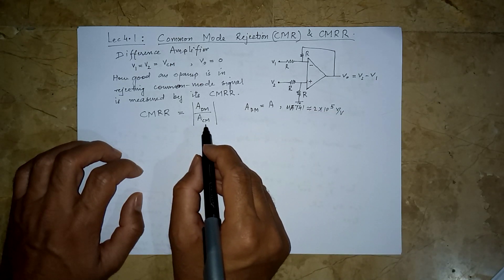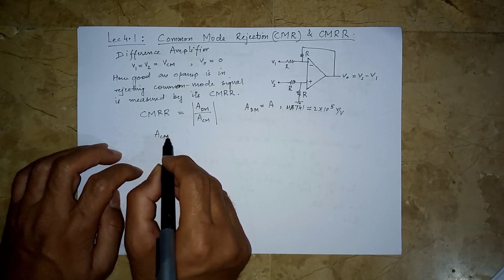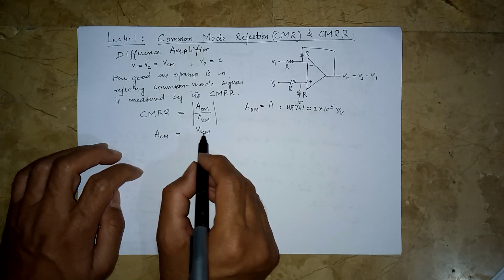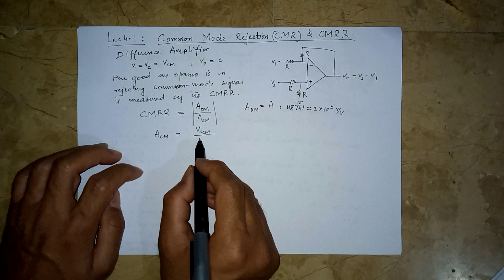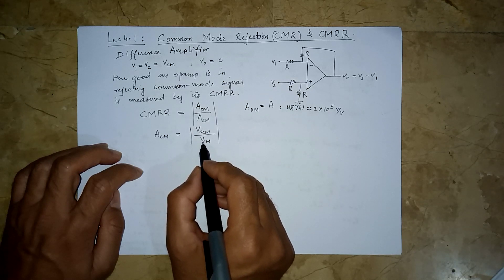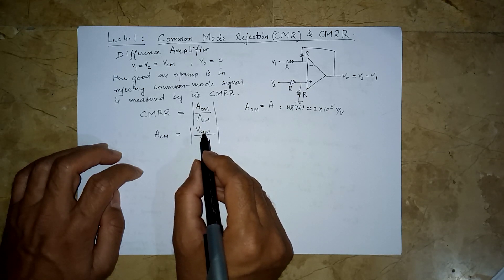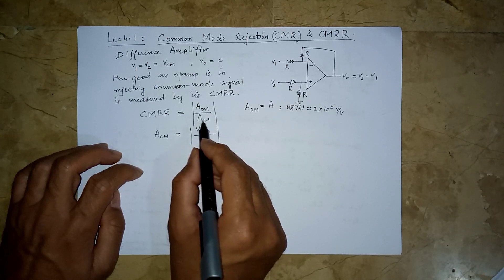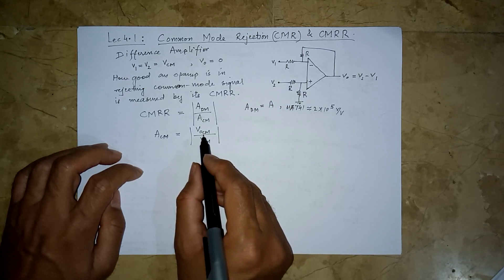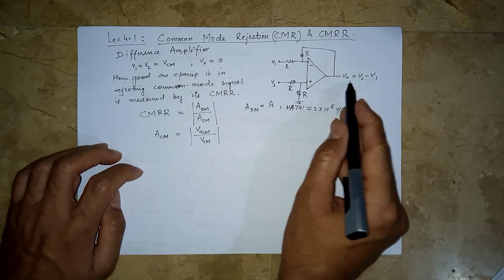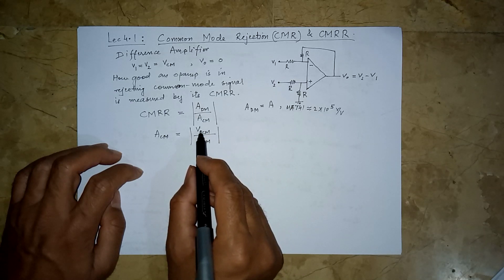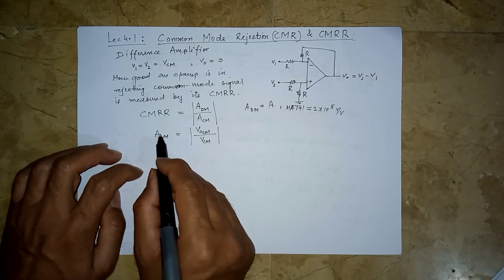Acm is defined as the common mode gain — it is the output of the op-amp when a common mode input Vcm is applied to both inputs. It should be zero ideally, but it is not zero. If the denominator Acm is zero, the CMRR must be a large value. But in reality, Vo will not be exactly zero; it will be a small value.